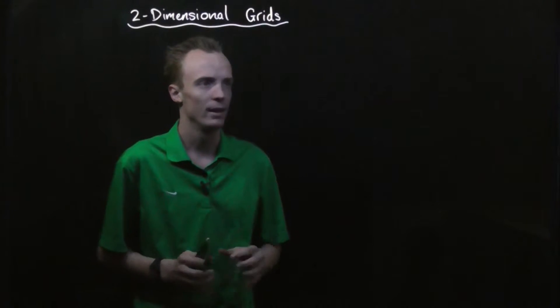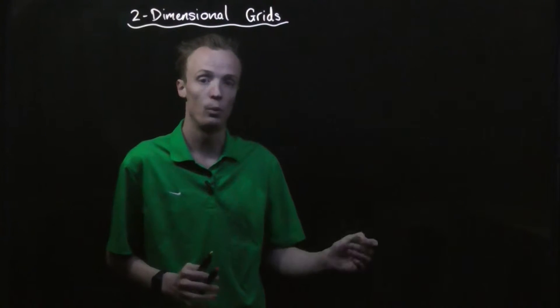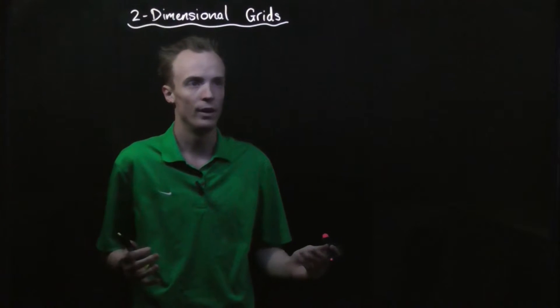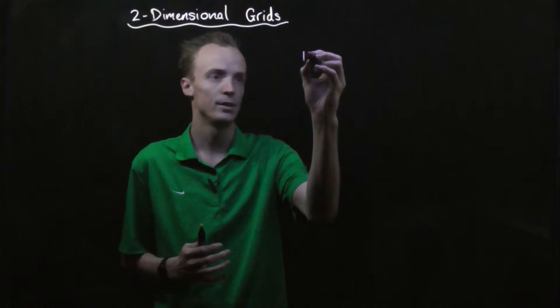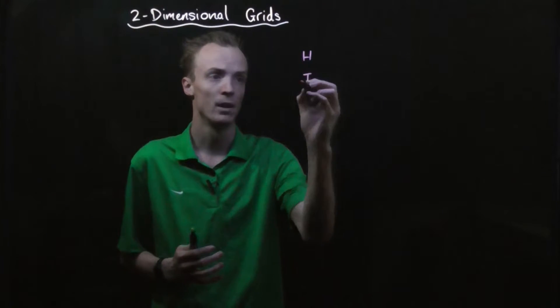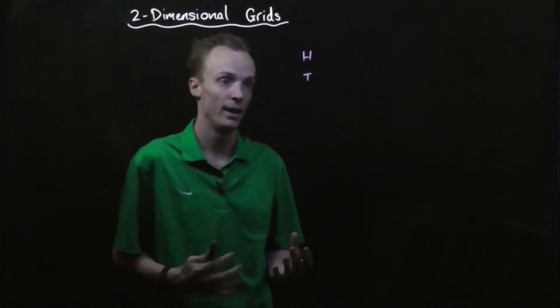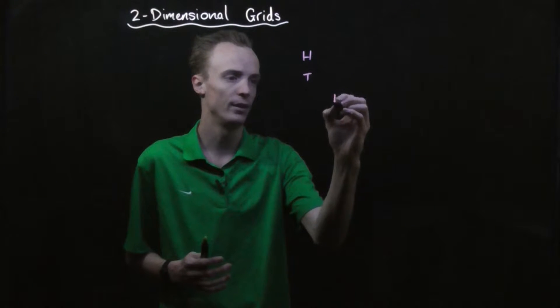For example, let's pretend that we're going to flip a coin twice. On one of those coins, we could get a heads or a tails, and the other coin we could get the same thing, a heads or a tails. I'm going to list it just the other way.